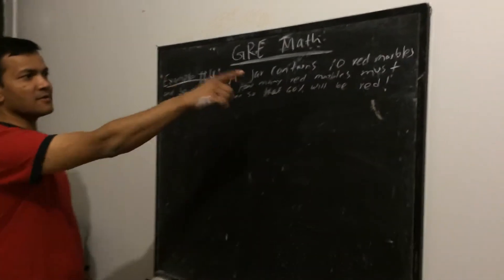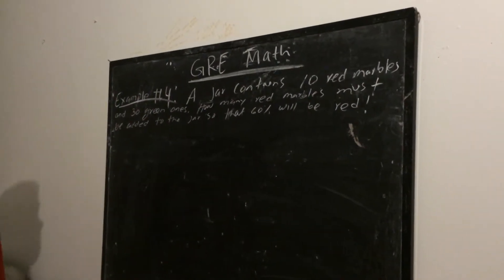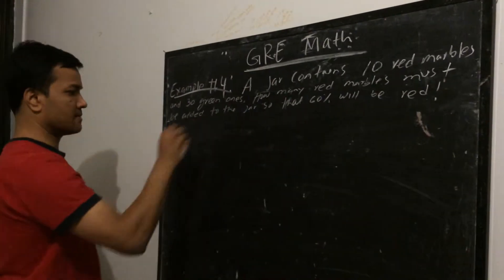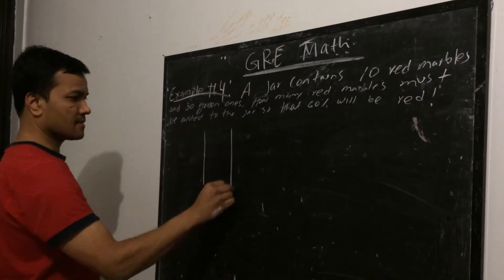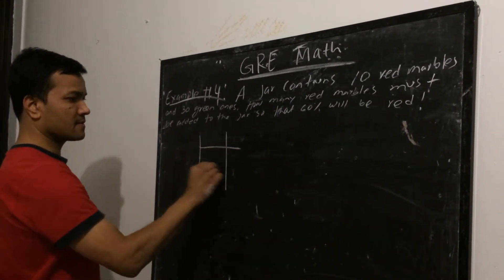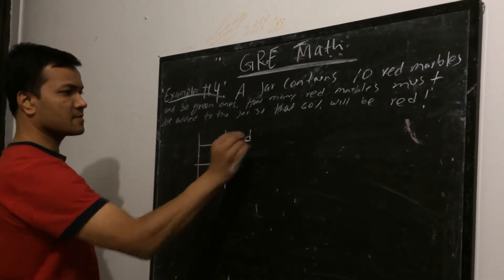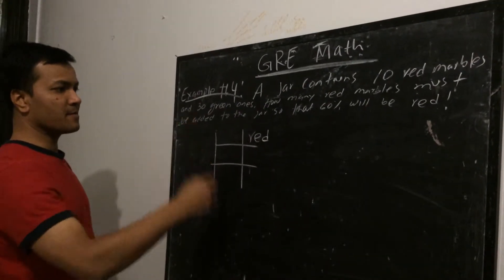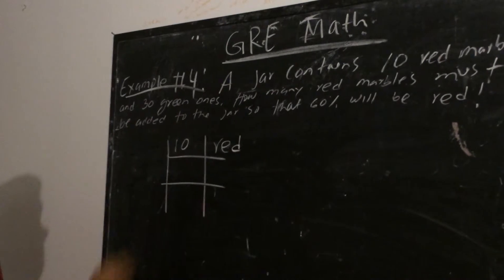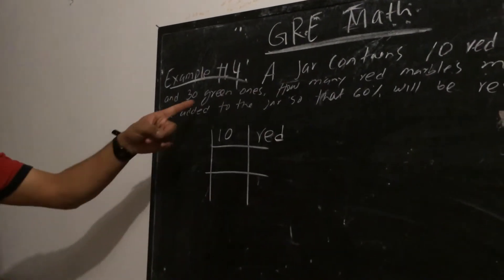The question is, a jar contains 10 red marbles, so let's draw a jar. This is red, so 10 red marbles, so 10 red, and 30 green ones.